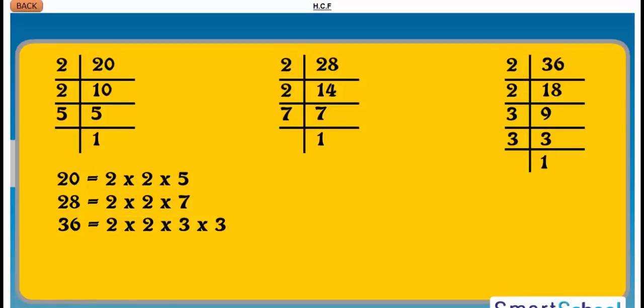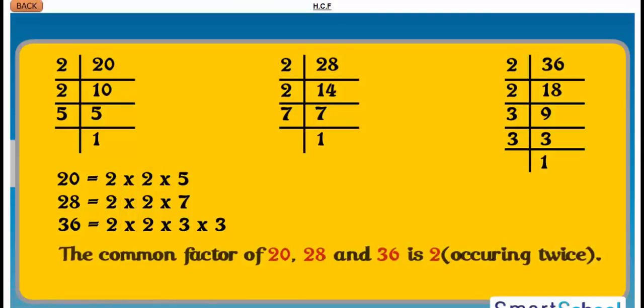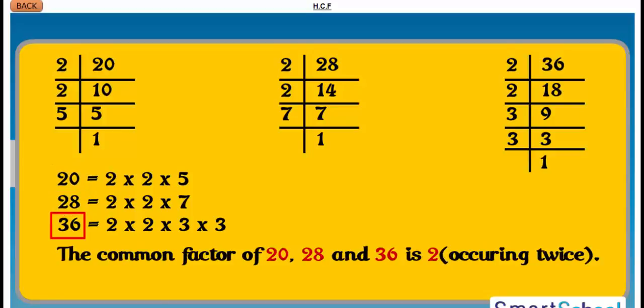Taking common from all the three numbers, we get 2 into 2. The common factor of 20, 28 and 36 is 2, occurring twice.